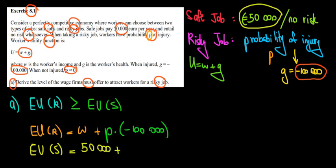There is no loss. So G is equal to zero, 50,000 plus zero, and that's equal to 50,000. So that would be equal to 50,000 euros.